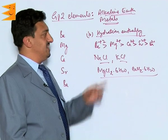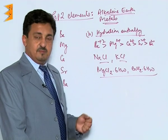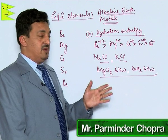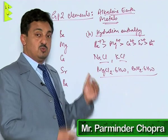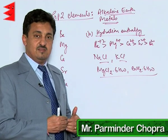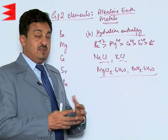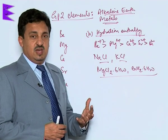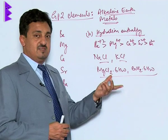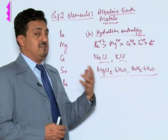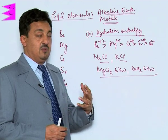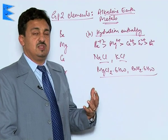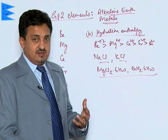The next property to be discussed is Hydration Enthalpy. The hydration enthalpy of alkaline earth metals is much more than that of the alkali metals. The reason is that they have a smaller size and higher nuclear charge — a 2+ charge — and sizes are smaller than alkali metals. That is why they get more hydrated, and their hydration enthalpies are much greater than those of alkali metals.